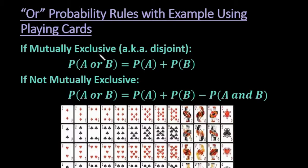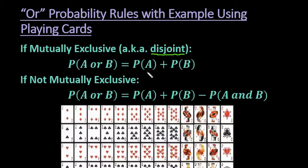Mutually exclusive means that there's no overlap between the two. For example, if I said the probability of a 7 or a 10, the card is either going to be a 7 or a 10 — it can't be both at the same time. If they can't occur at the same time, they are known as mutually exclusive, and some textbooks call this disjoint. The rule is: the probability of A or B equals the probability of A plus the probability of B.